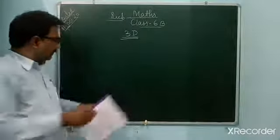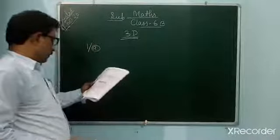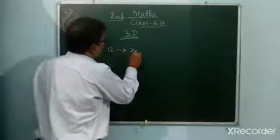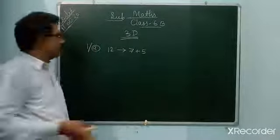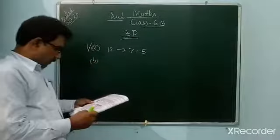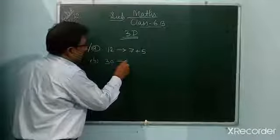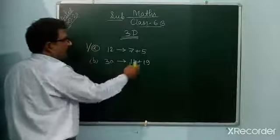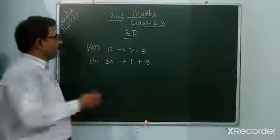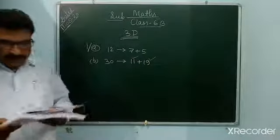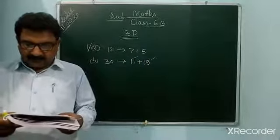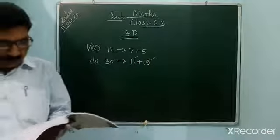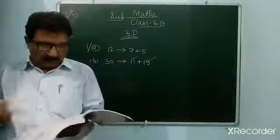Express each as the sum of two prime numbers. (A) 12: you can write 7 plus 5 — 7 is also a prime number, 5 is also a prime number. (B) 30: 11 plus 19 — 11 and 19 are both prime numbers, and 11+19=30. (C) 68: 31 plus 37. (D) 72: 31 plus 41. You can write these.